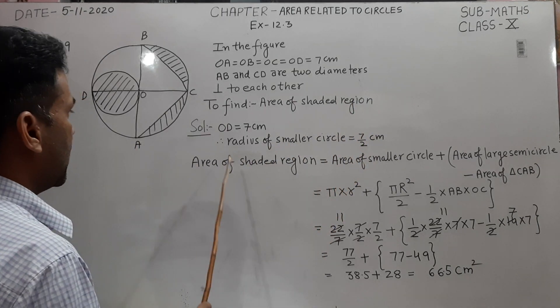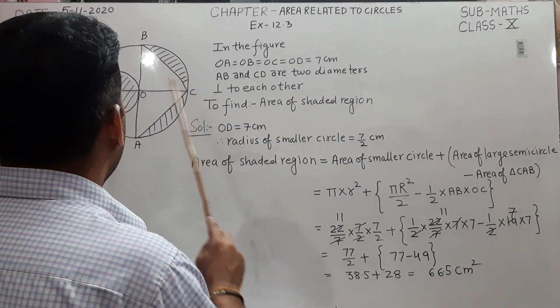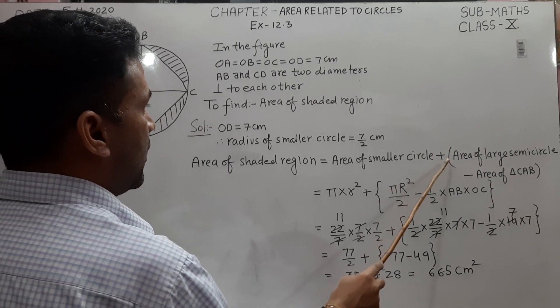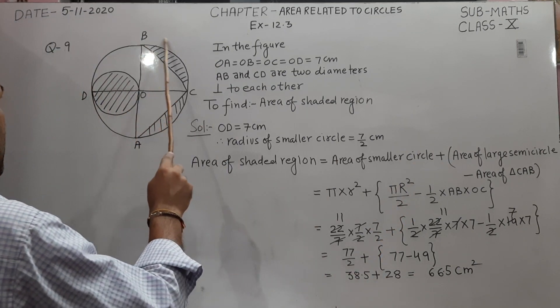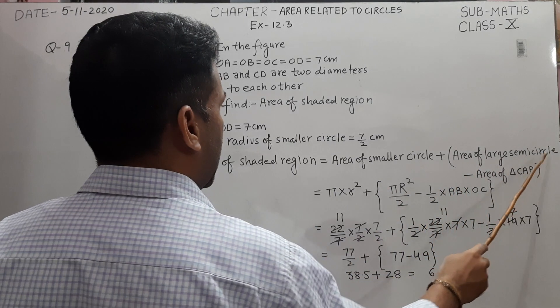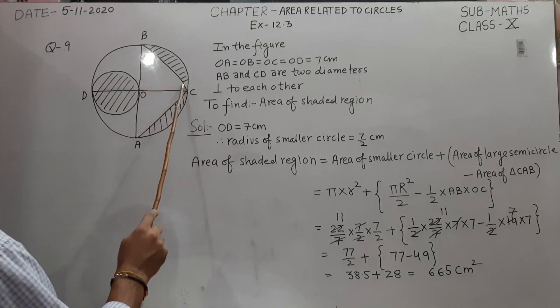The area of the shaded region can be obtained by taking the area of the smaller circle plus the area of the larger semicircle minus the area of triangle CAB.